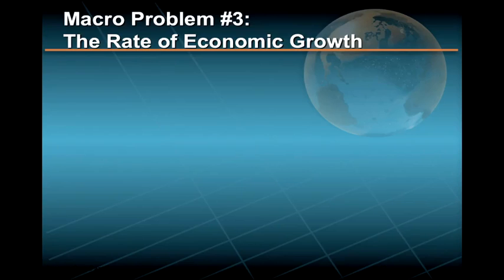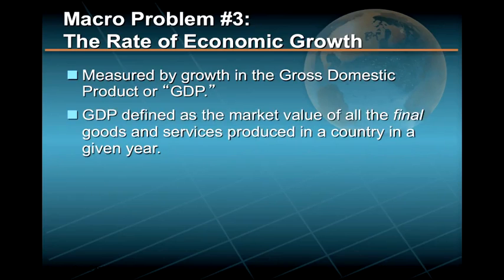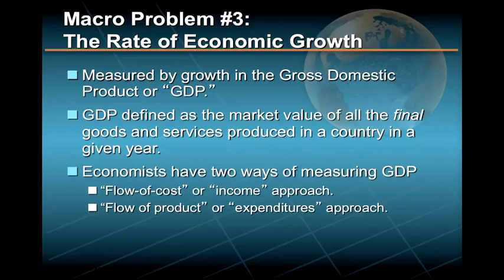The third major macroeconomic policy problem focuses on the rate of economic growth, typically measured by the growth in the nation's gross domestic product, or GDP. GDP is defined as the market value of all the final goods and services produced in a country in a given year. Economists have two ways of measuring it: the flow of cost or income approach, and the flow of product or expenditures approach.